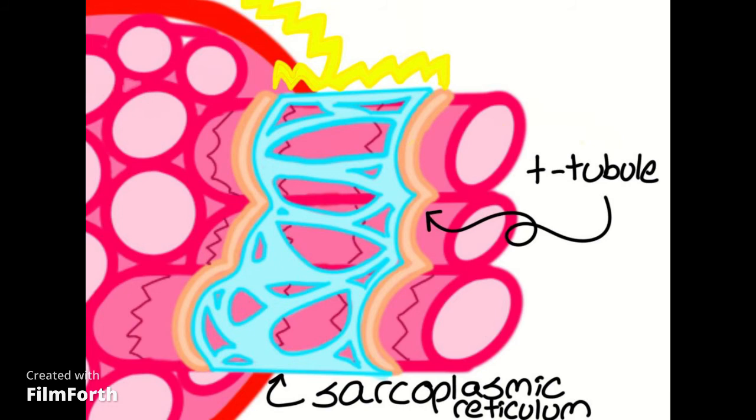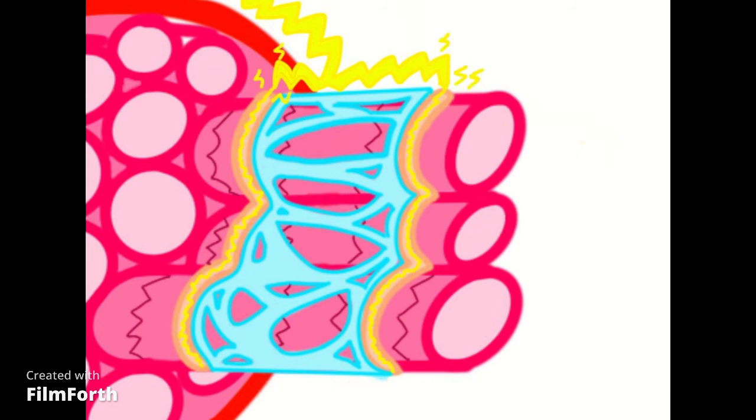On either side of the sarcoplasmic reticulum is a T-tubule that the signal continues to pass through. The T-tubules then pass a signal throughout the sarcoplasmic reticulum.